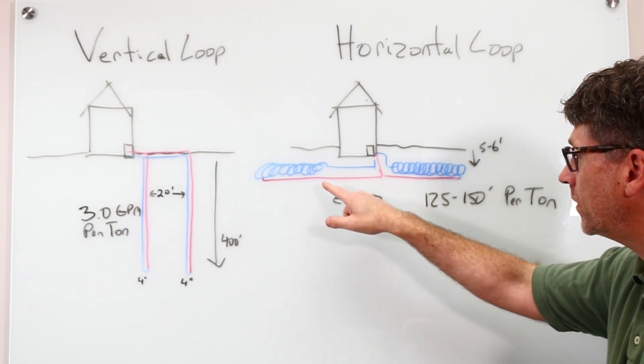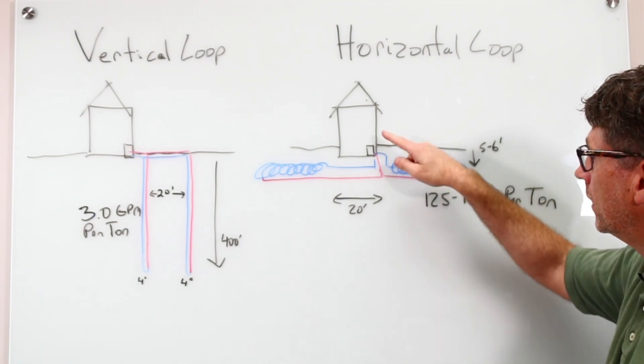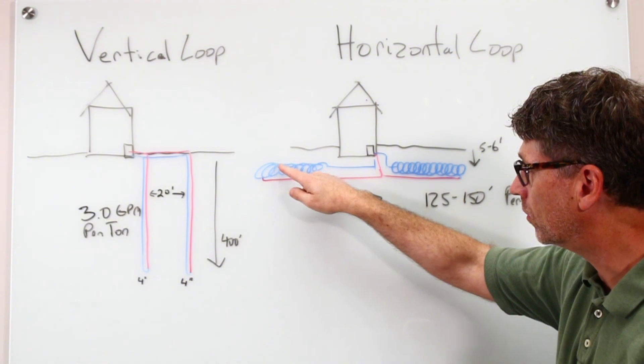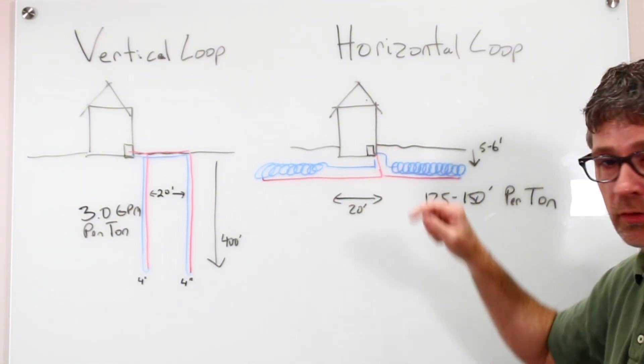If you have more than one such trench, you want them to be at least 20 feet apart. Water comes out the system, goes across that slinky, and then comes back into your geothermal system.